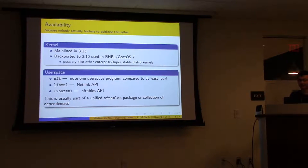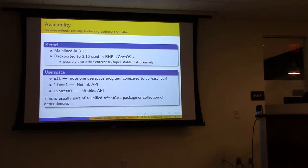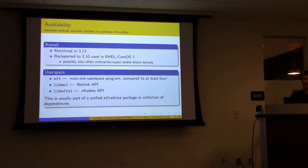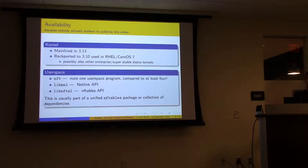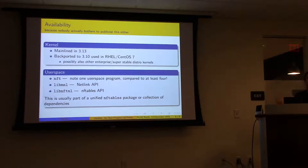On the kernel side, they put in kind of a virtual machine — really a bytecode interpreter. When you put in rules, the user-space stuff converts them into bytecode, and the little virtual machine parses everything and does all the packet processing, which then interacts with the rest of the existing netfilter stack.